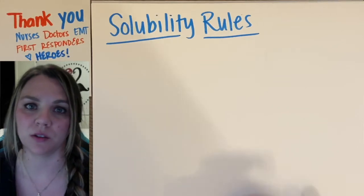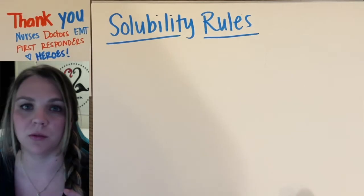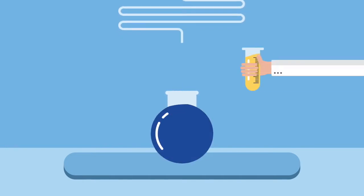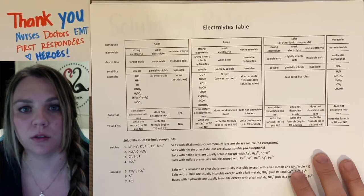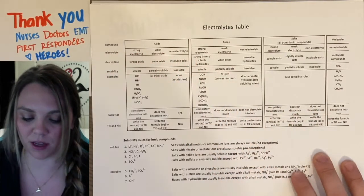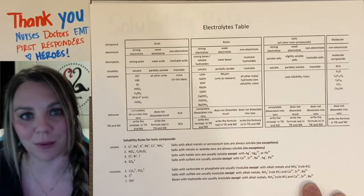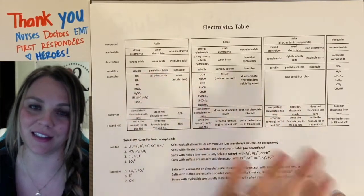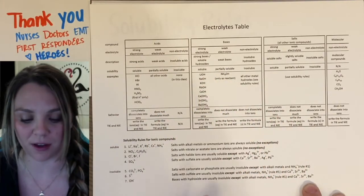We are going to be looking at solubility rules, and especially how to apply those solubility rules when you're looking at your electrolyte table. You all have this, your electrolytes table, which tells you a ton of information. It's basically like a key, a beautiful key that tells you all the answers, you just need to know how to read it.